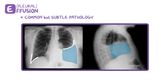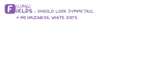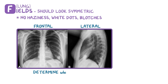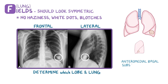F is for lung fields, which should look symmetric. There shouldn't be any haziness, white dots, or blotches. While looking at lung fields, having a frontal and a lateral x-ray allows us to determine in which lobe of which lung an abnormality is located. In this case, a nodular mass is visible in the inferior, lateral, and anterior left lung, meaning it's most likely within the anteromedial basal subsegment of the lower left lobe. This can be confirmed with a chest CT.